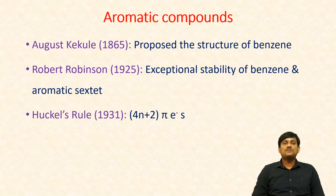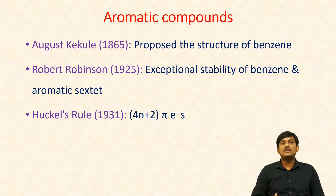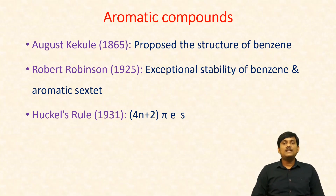In 1865, August Kekulé proposed the structure of benzene. In 1925, Robert Robinson explained the stability of benzene. The stability of benzene is due to delocalization of six pi electrons. He proposed the aromatic sextet — according to this rule, compounds are stable when six pi electrons are delocalized in the molecule. In 1931, Hückel proposed the 4n+2 pi electrons rule. According to this rule, a cyclic planar molecule containing 4n+2 pi electrons is aromatic.